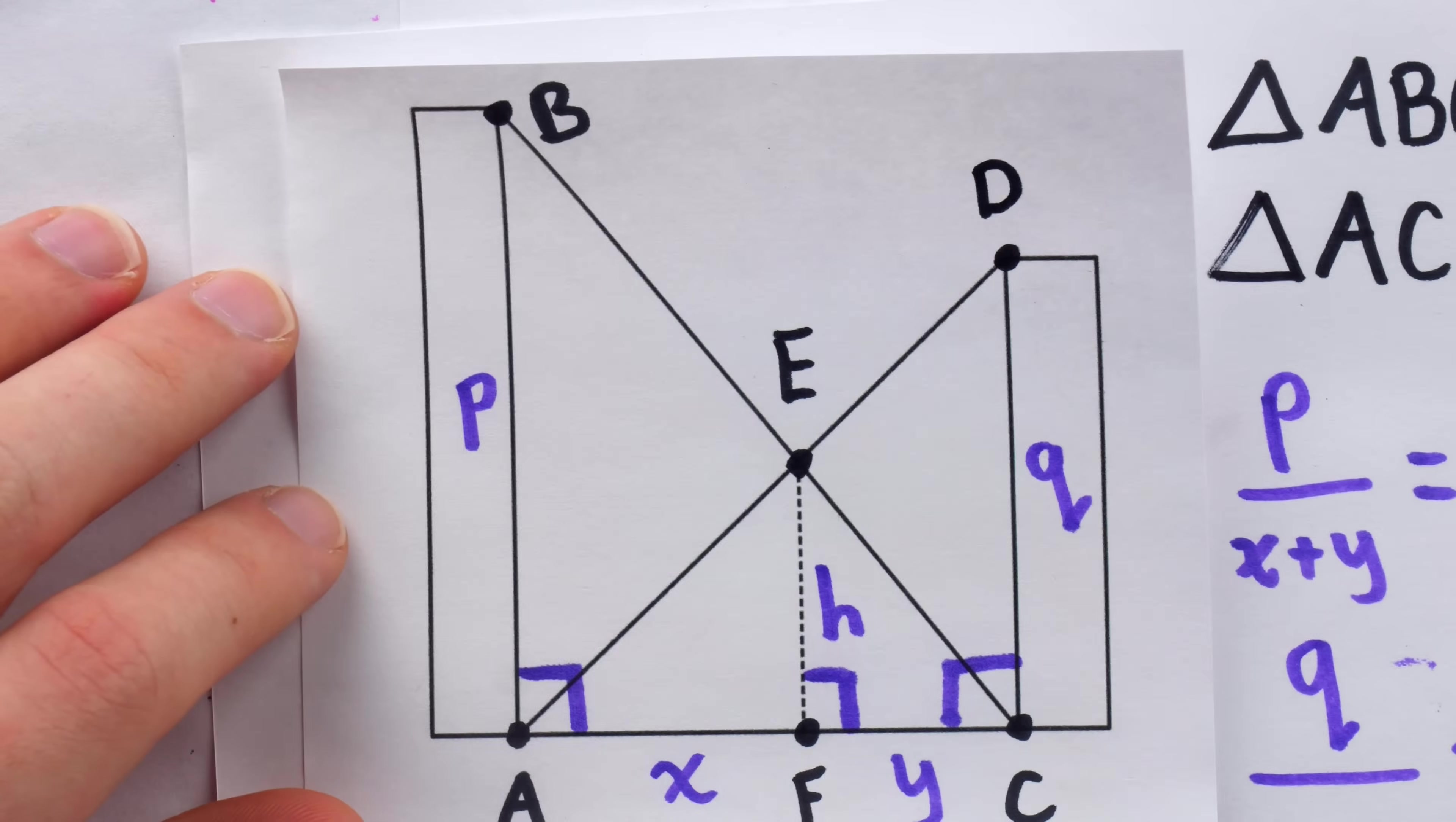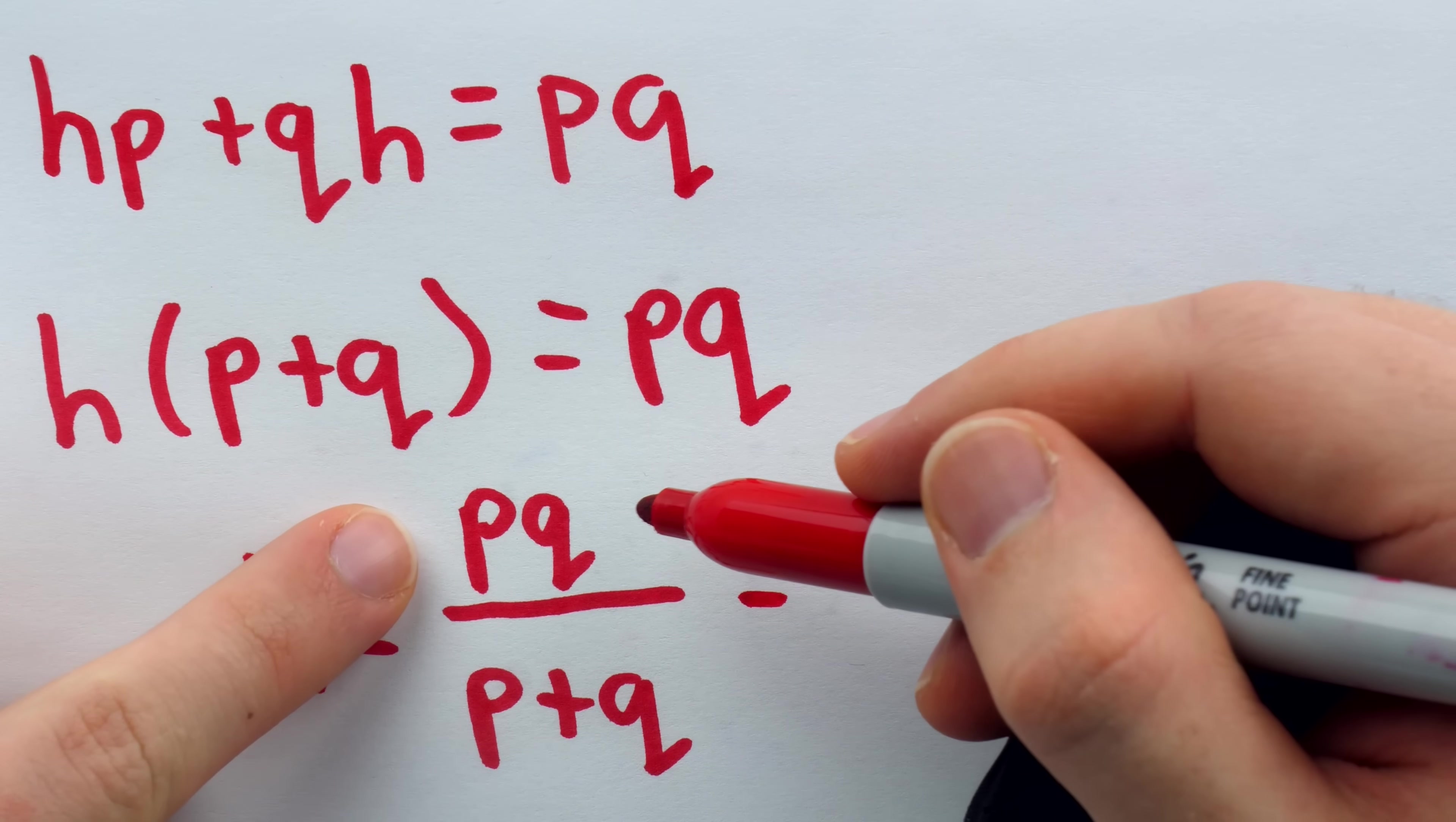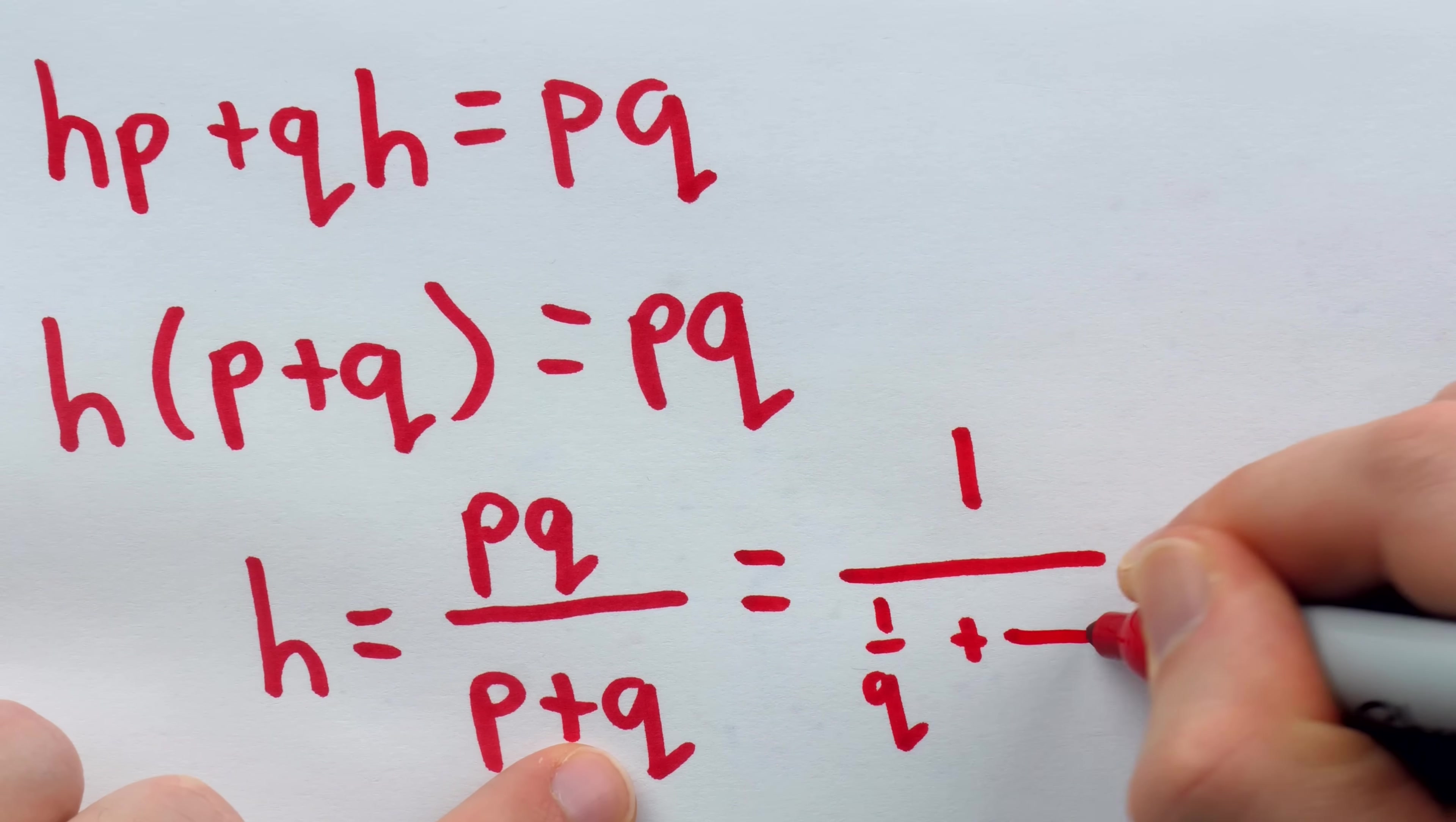So in this situation where the heights of the pillars are P and Q, the height of that point of intersection of the strings that are tied to them is going to be P times Q divided by P plus Q. Now, there's actually a bit more interesting stuff going on with this if you're willing to work with the expression a little bit. Let's divide the numerator and denominator both by PQ. So the numerator we divide by PQ, which turns it into 1. And the denominator we divide by PQ. When you divide P by PQ, you get 1 over Q. When you divide Q by PQ, you get 1 over P.